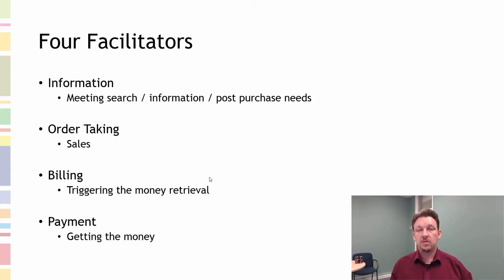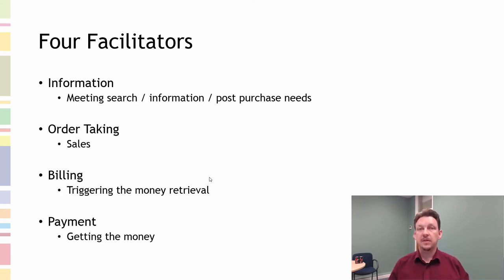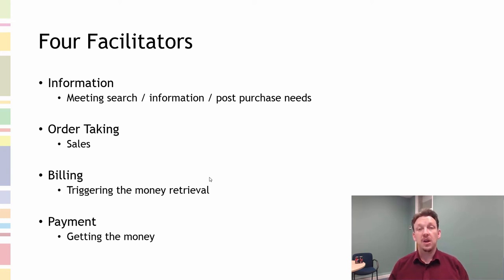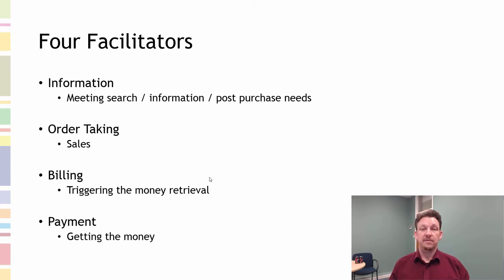How does someone find out about the product? Thinking back to consumer behaviour and the diagrams on the CV, once problem recognition has happened, we go to search behaviour. How do we provide that information so that people can access and realise that the service exists and that it can meet their need? So how do we facilitate the information necessary from the consumer's information search — internal and external?